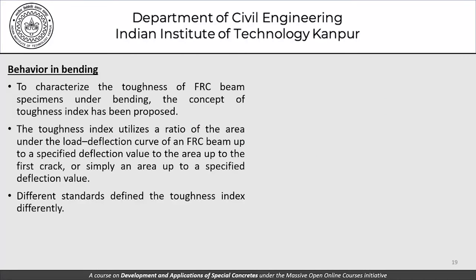In reinforced concrete we have a beam or column with reinforcing bars and shear reinforcement. In fiber reinforced concrete, fibers do not replace that reinforcement but change the concrete itself — all the concrete in the member has fibers distributed throughout. To characterize toughness of FRC beams under bending, the toughness index concept has been proposed: it utilizes the ratio of the area under the load-deflection curve of an FRC beam up to a specified deflection level, to the area up to first crack or a base area. Different standards define this toughness index differently.